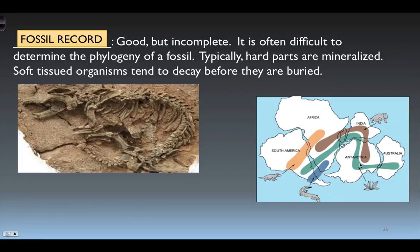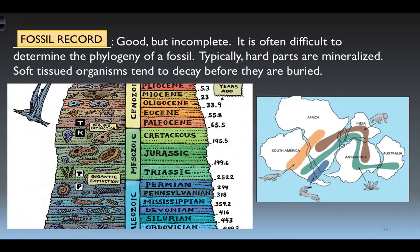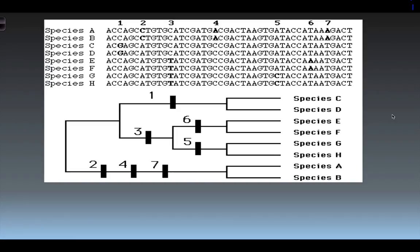We can also use the fossil record for dating animals. Although not perfect, the rules of geology tell us that as we go deeper we tend to find older fossils. However, certain types of geologic behavior and upheaval can change that. If you get a chance and want to see how fossils are made, watch TED-Ed's 'How to Fossilize Yourself.'